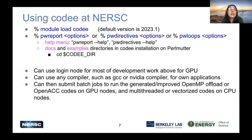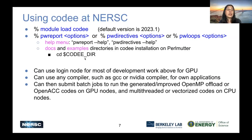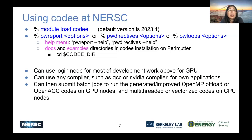To use CODI, run module load CODI — the default version is 2023.1. There are several commands: pwreport, pwdirectives, pwloops, with different options. Use --help to find the help menu. There is also documentation and example codes in the installation directory under the CODIDIR variable. You can use the login node for most development work for GPU CODI commands. You'll be choosing different compilers — most likely GCC — using the CODI-supported compilers to run the pwreport commands.